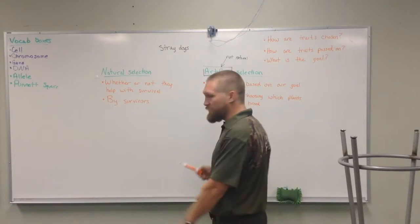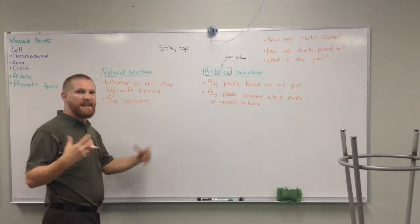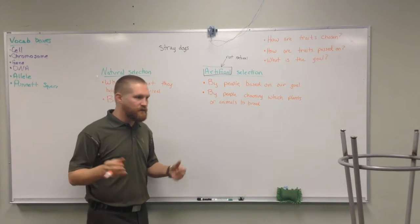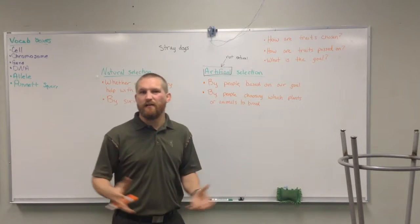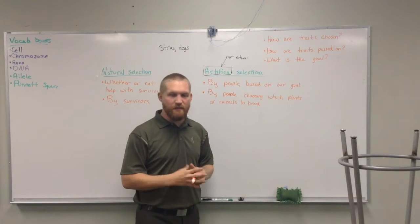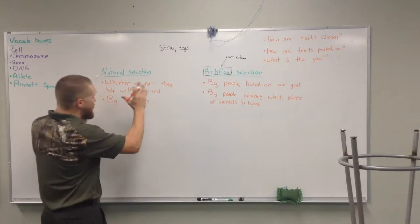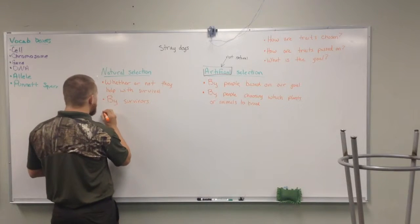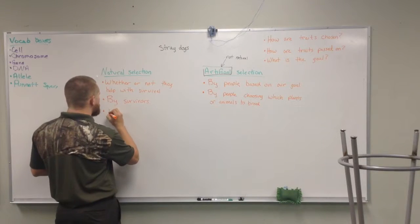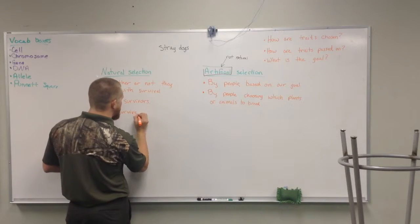The third question: what's the goal of each? Natural selection — the goal is to survive and reproduce. No animal decides it's going to survive, but that's how nature works. Animals are constantly trying to survive, and if they have some trait that gives them an advantage, that's natural selection. Traits that help survival get passed on.